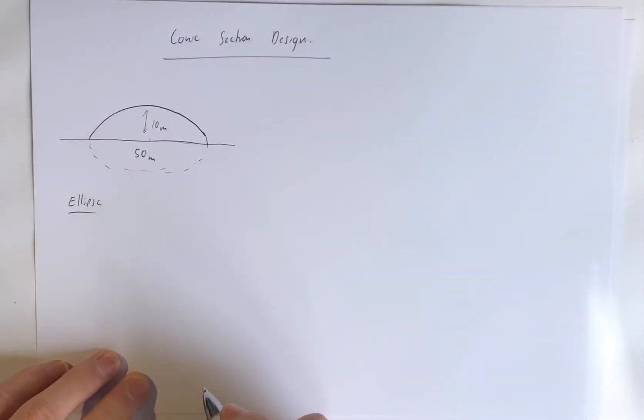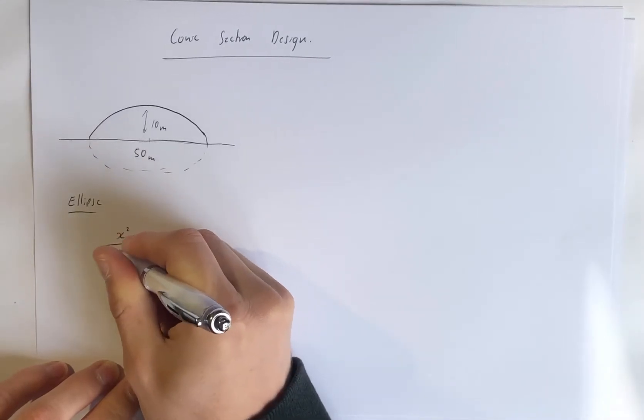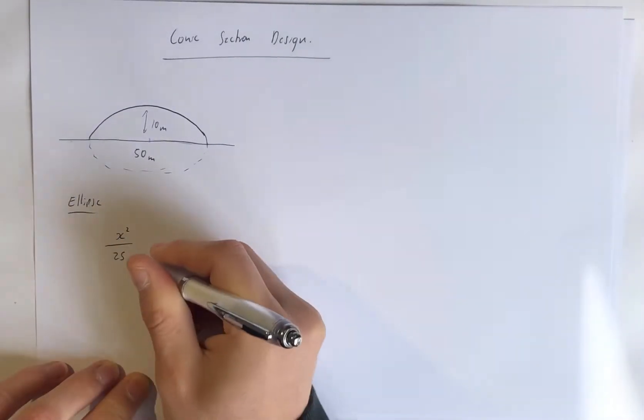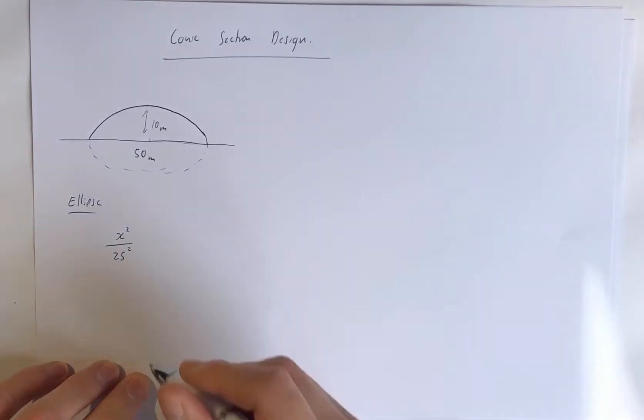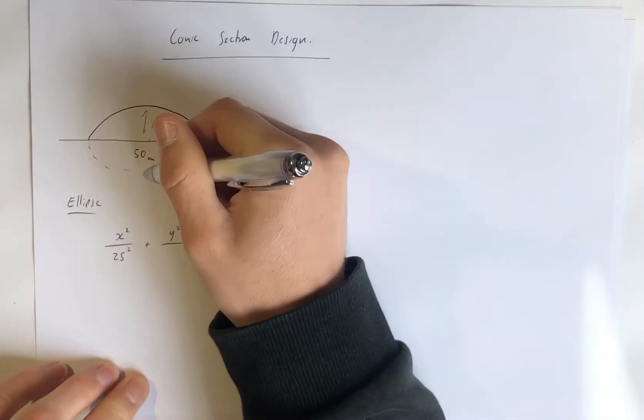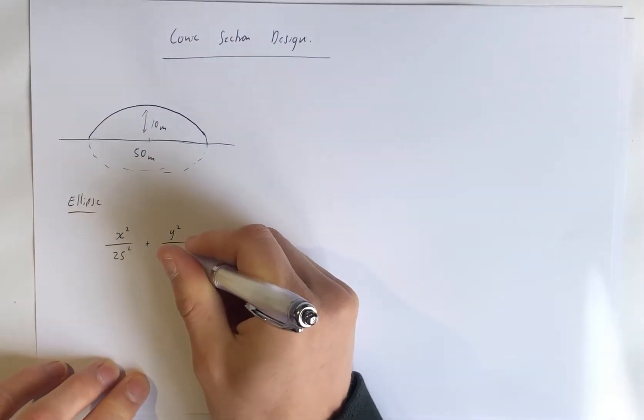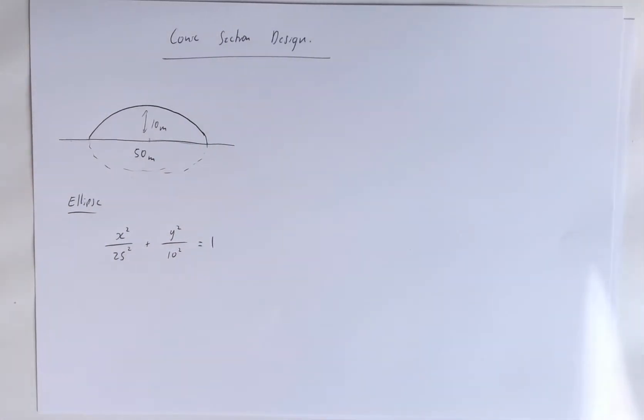So we would have x squared over a squared, over 25 squared, plus y squared over half of the minor axis squared, so over 10 squared, and that equals 1. And that's your ellipse.